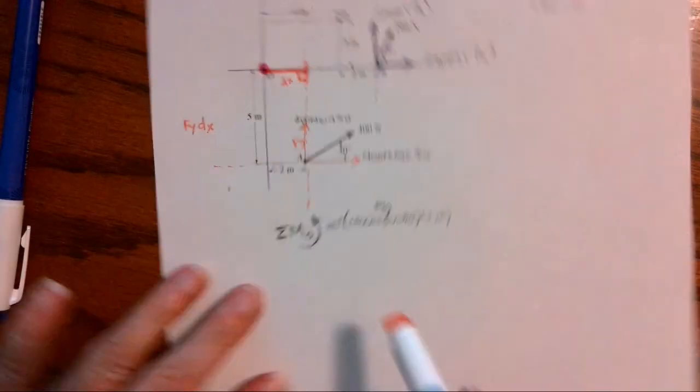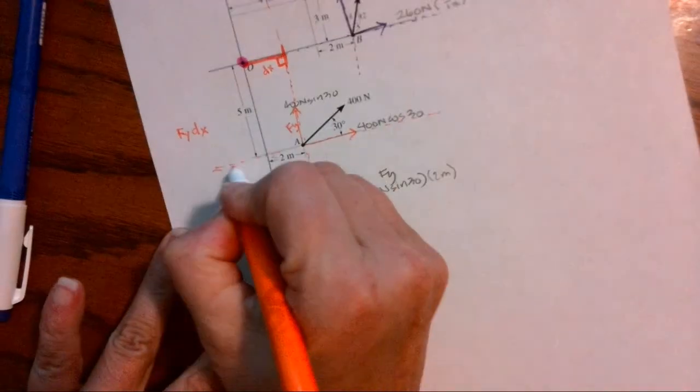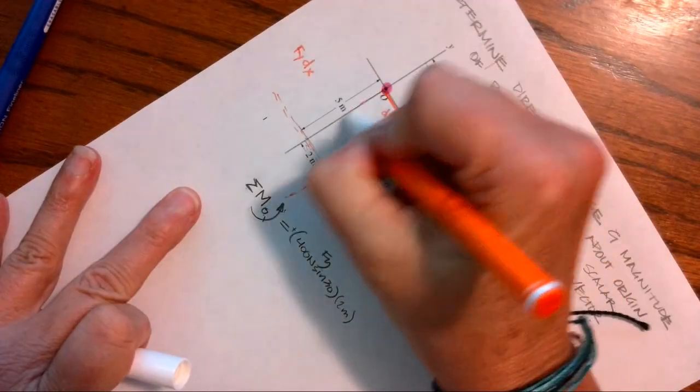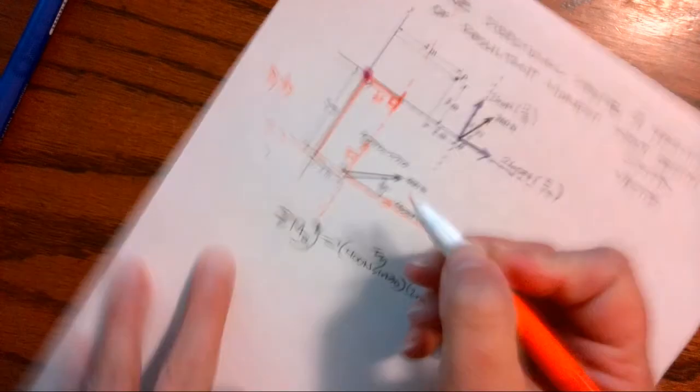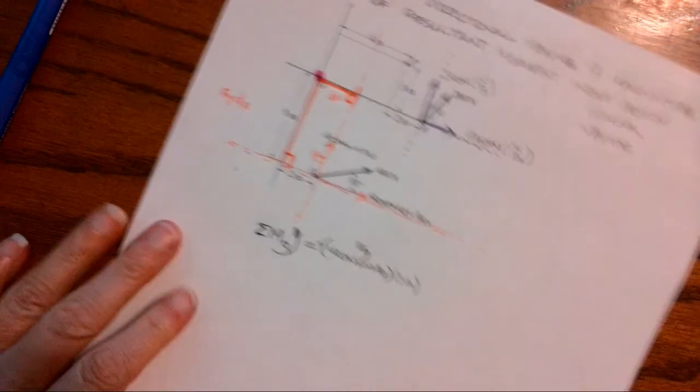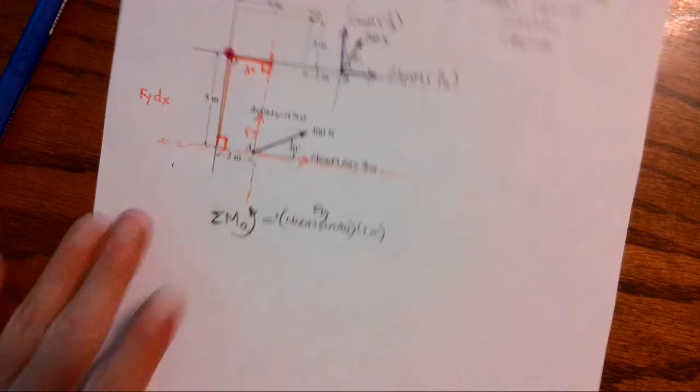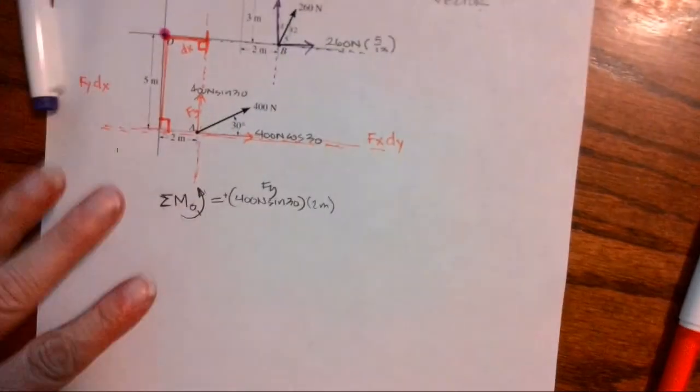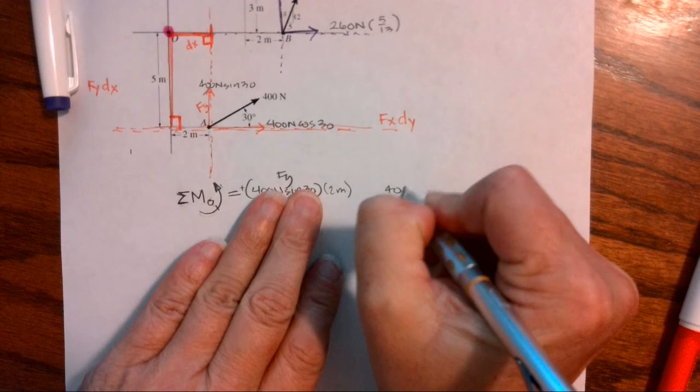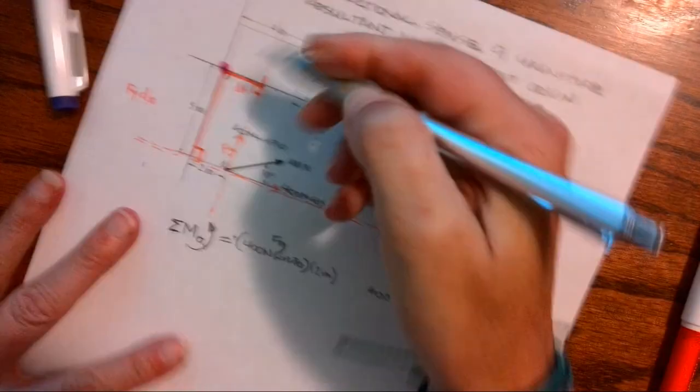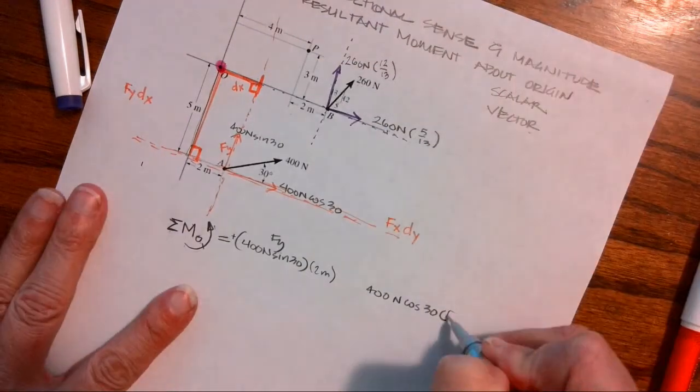So now let's look at the X component. The X component travels in the X direction. So I need a DY. I need a distance in the Y direction. And I'm going to find that perpendicular distance. So if I have a force in the X direction, I need a distance in the Y direction. 400 Newtons cosine 30 times five meters.